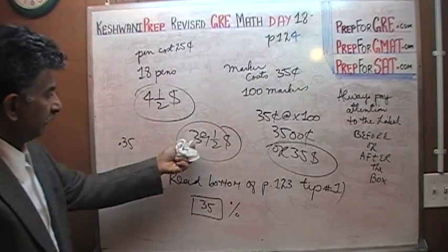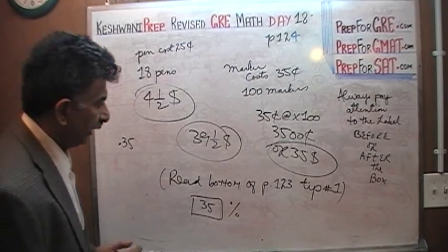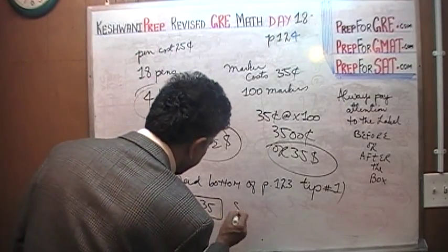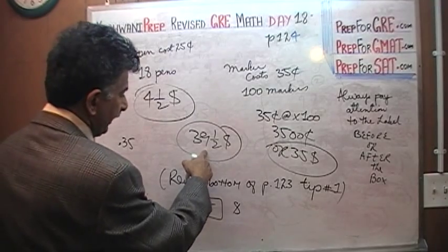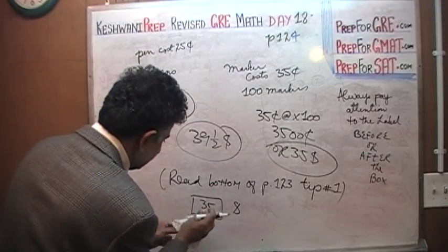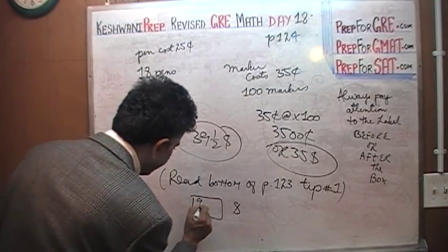Similarly here, we have 39.5, and outside we have dollar signs, so that's why we have to convert this into dollars. 39 and a half dollars would be put in here as 39.5.